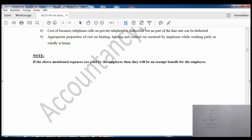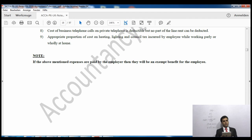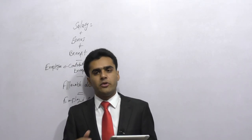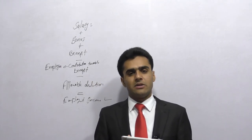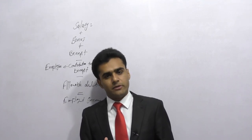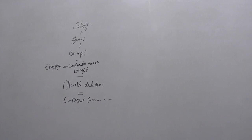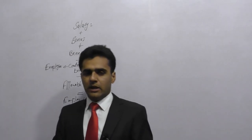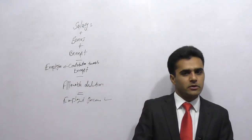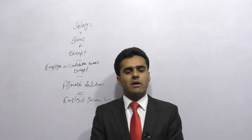An appropriate proportion of heating, lighting, and council tax costs incurred by an employee working partly or wholly at home is also deductible. If any of these expenses are paid by the employer instead, they will be an exempt benefit for the employee. That concludes this lecture — we will continue in the next video as this is one of the biggest chapters in ACCA P6 Taxation.